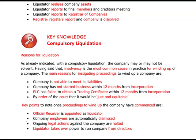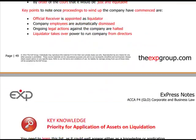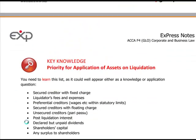There may also be a court order that it would be just and equitable to liquidate the company. Key points once proceedings to wind up the company have commenced: the official receiver is appointed as liquidator, company employees are automatically dismissed, any ongoing legal actions against the company are halted, and the liquidator takes over the power to run the company from the directors, who lose their executive powers.